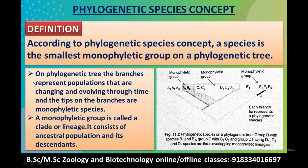Now let's talk about the characteristic features of the phylogenetic species concept. On a phylogenetic tree, the branches represent populations that are changing and evolving through time, and the tips on the branches are monophyletic species. A monophyletic group is called a clade or lineage — it consists of an ancestral population and its descendants.